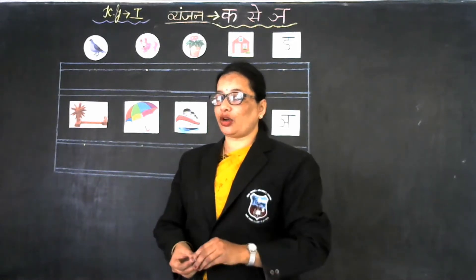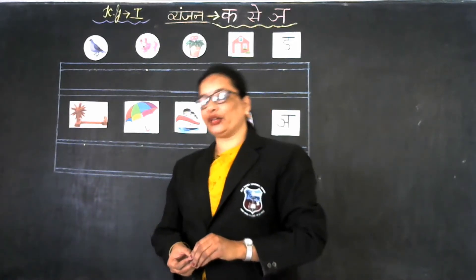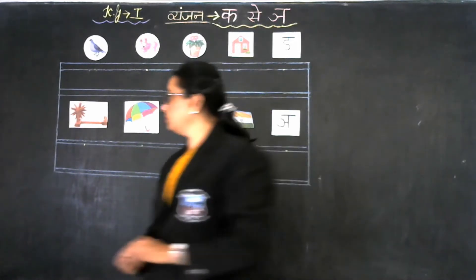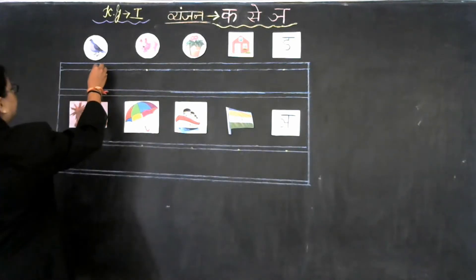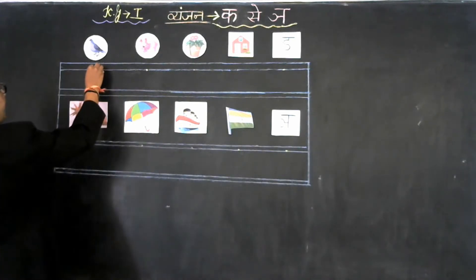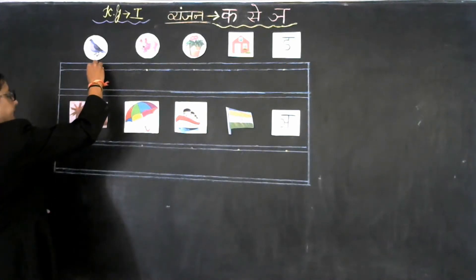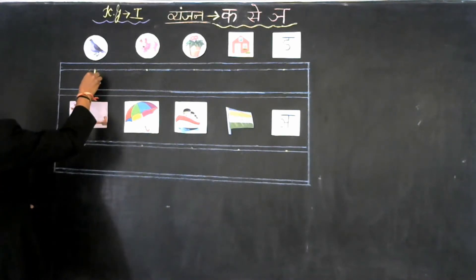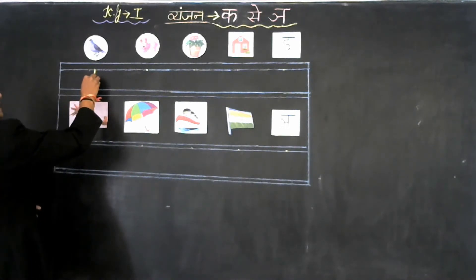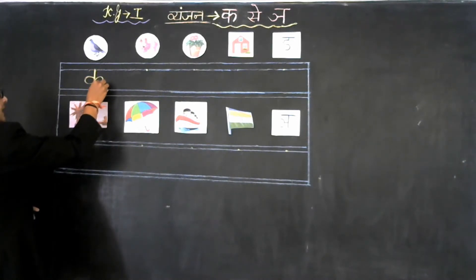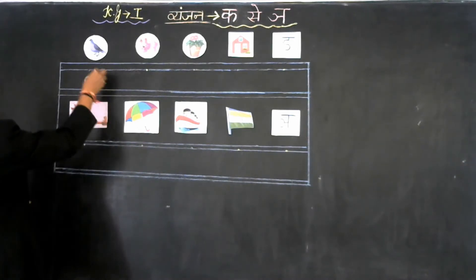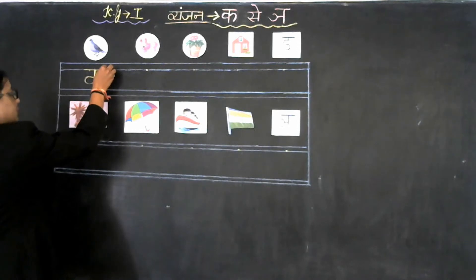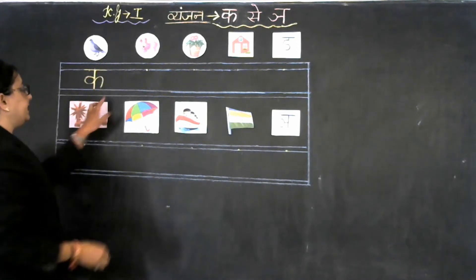And what is the formation of Vyanjan Ka? Now look at the board. First we have to draw a standing line like this, then a small circle like this, then a half circle like this, and a slipping line on the top like this.